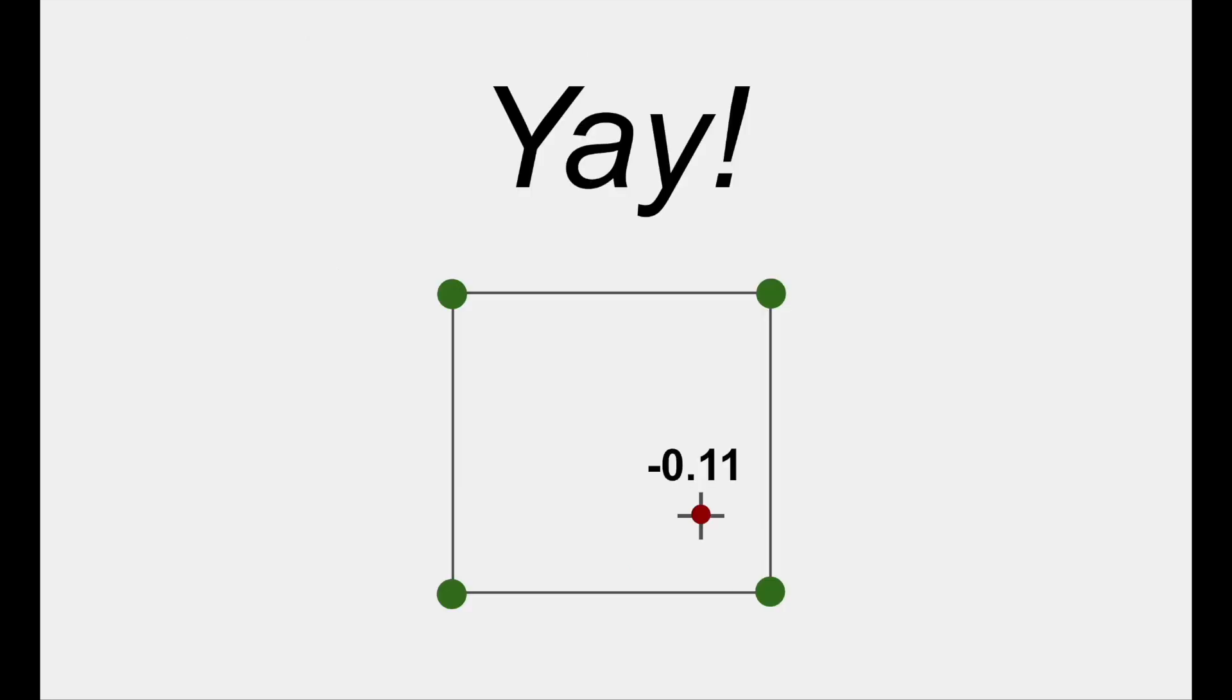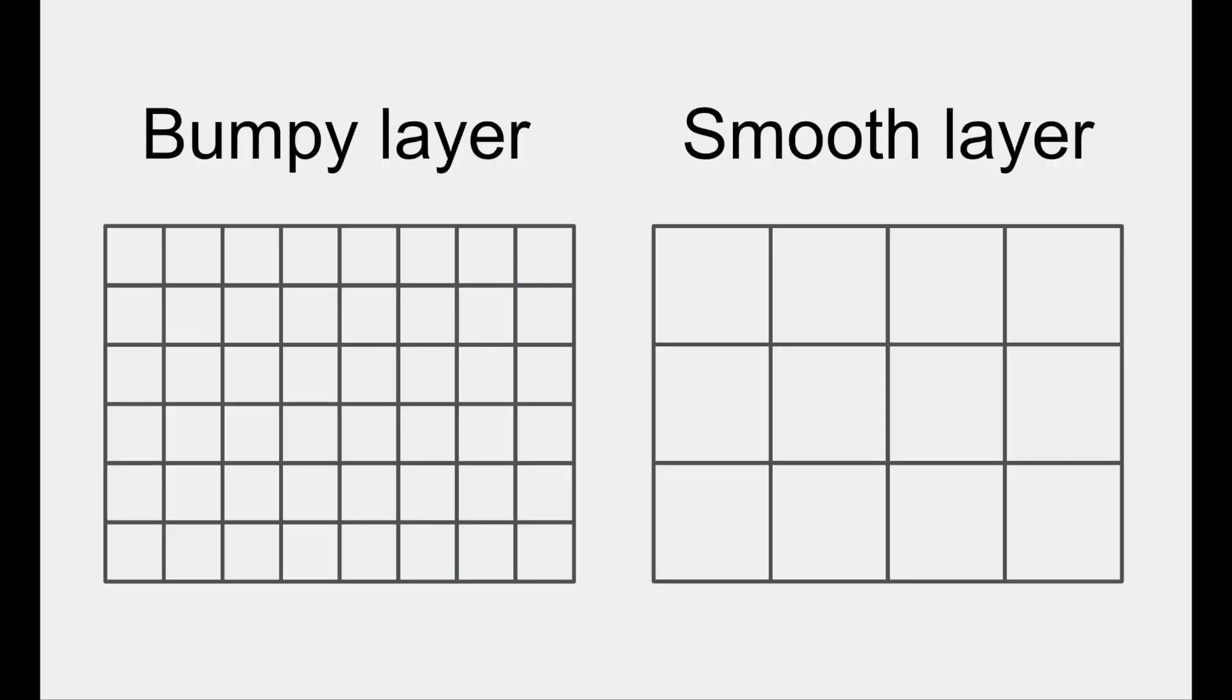You now know how to get the Perlin noise value for a given point in space. At this point, you can recreate the height map at the beginning of the project by following the previous procedure on every pixel in the map. Remember to use multiple layers for the best effect. To make a layer bumpier, simply increase the width of each vector grid square.